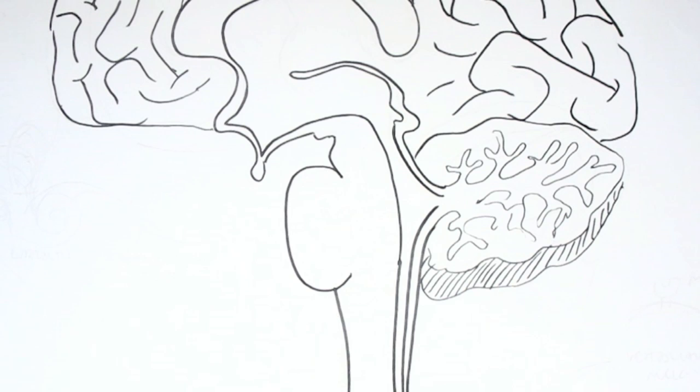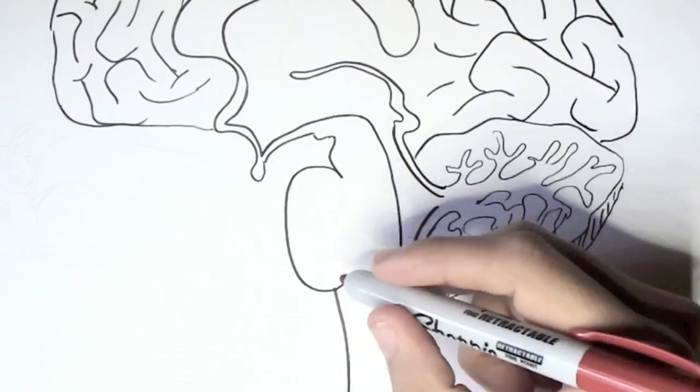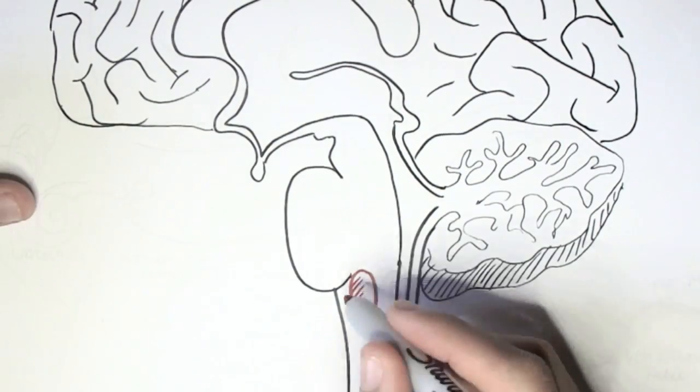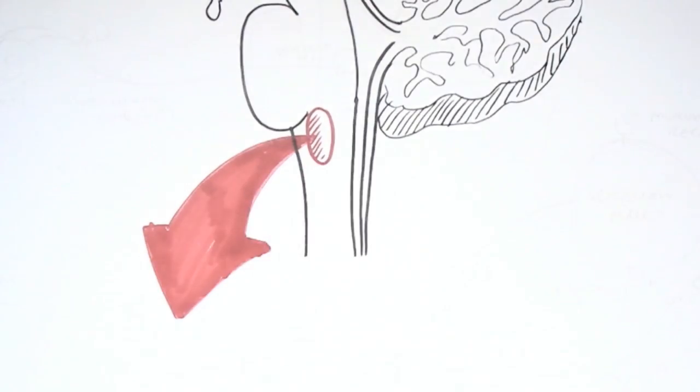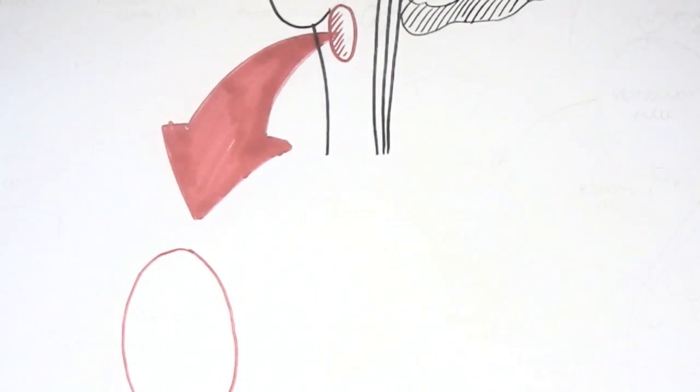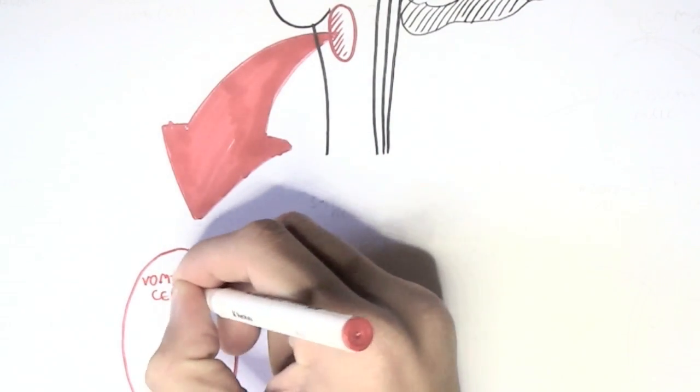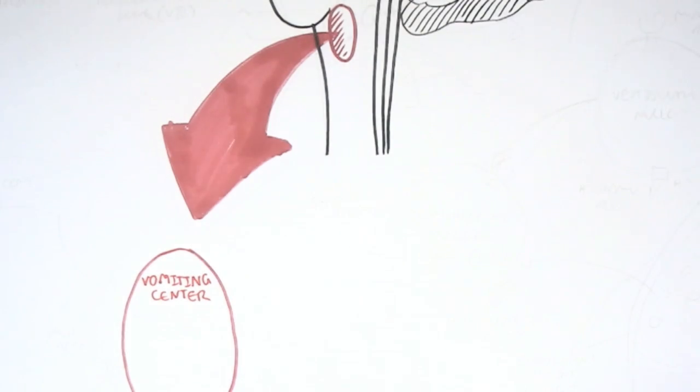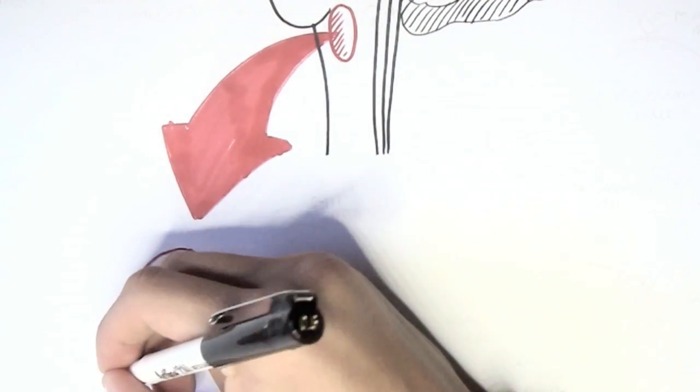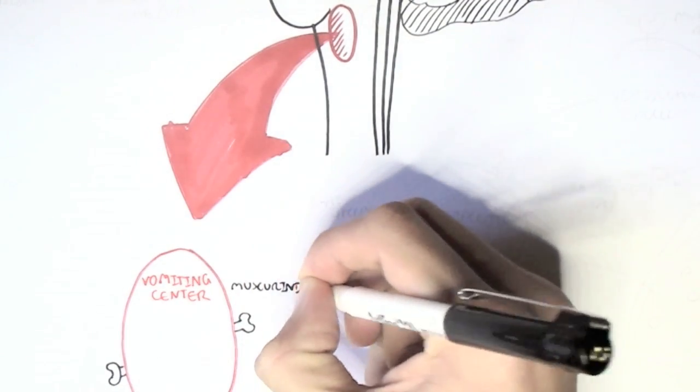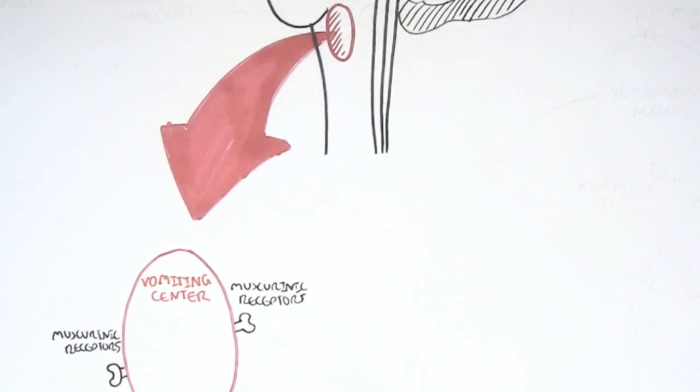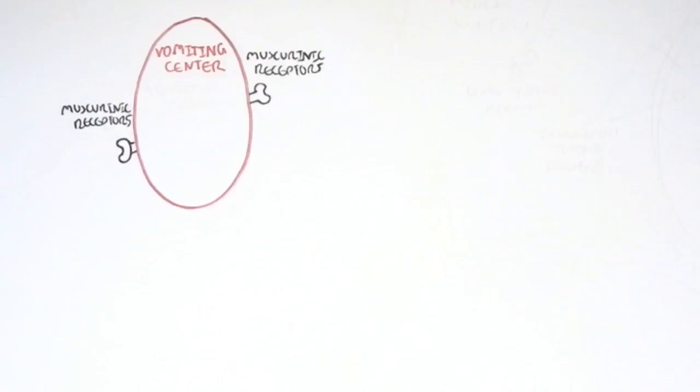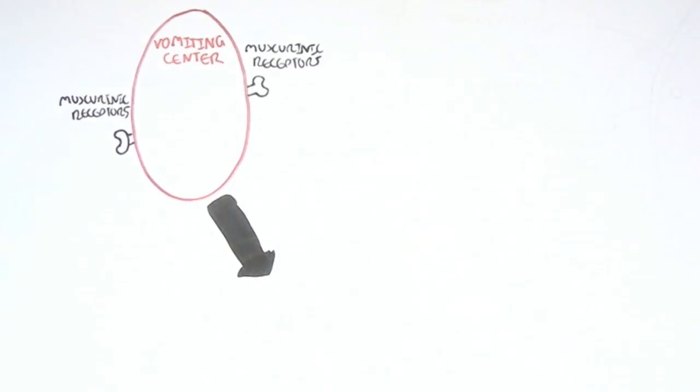There is a center or area known as the vomiting center here that initiates, regulates and controls the act of vomiting. The vomiting center is located in the reticular formation of the medulla oblongata. The vomiting center has predominantly muscarinic type receptors. And so activation of these receptors will activate the vomiting center to send signals to the muscles that carry out the physical act of vomiting.